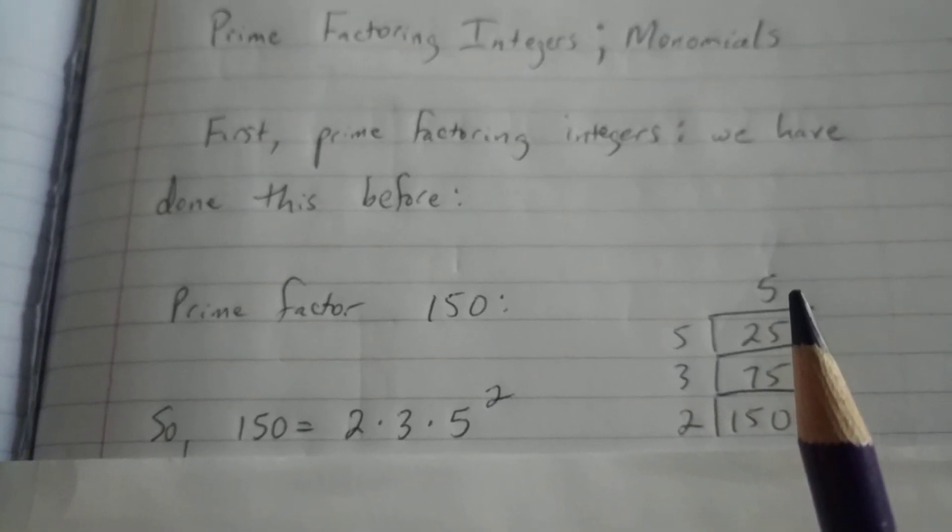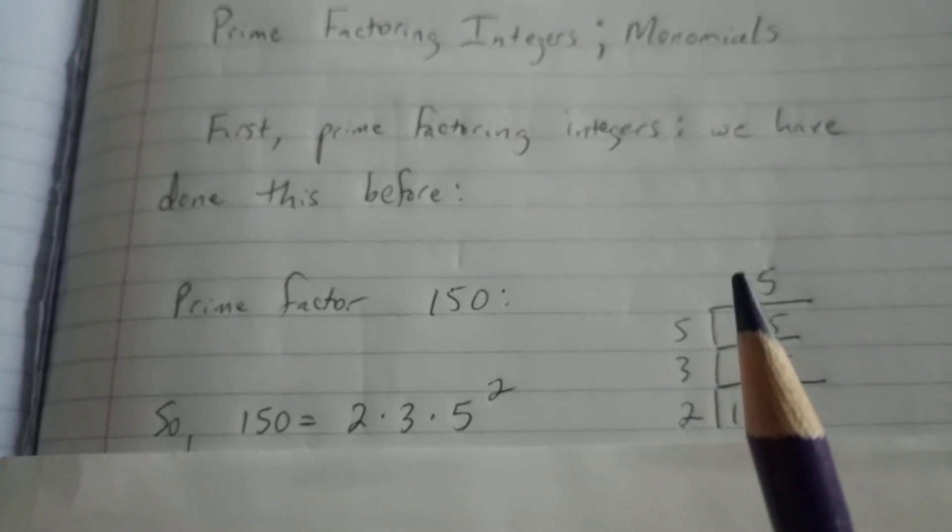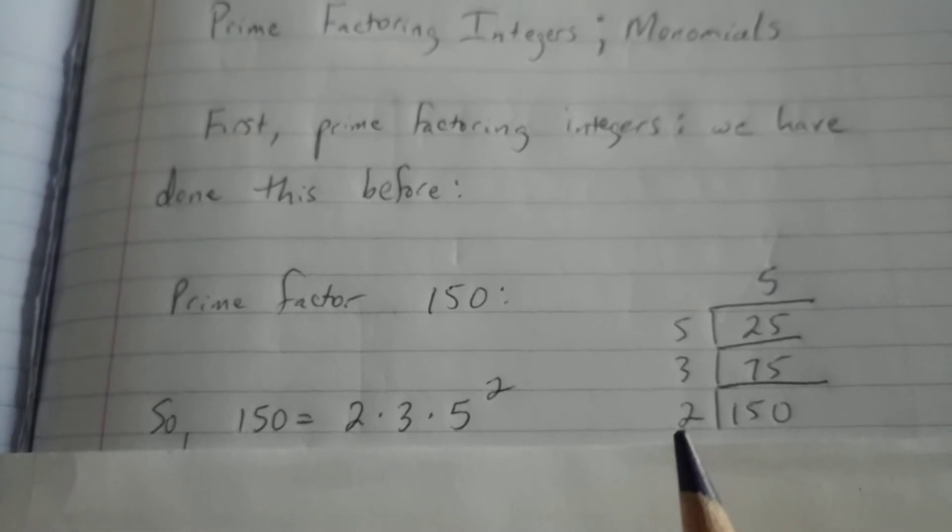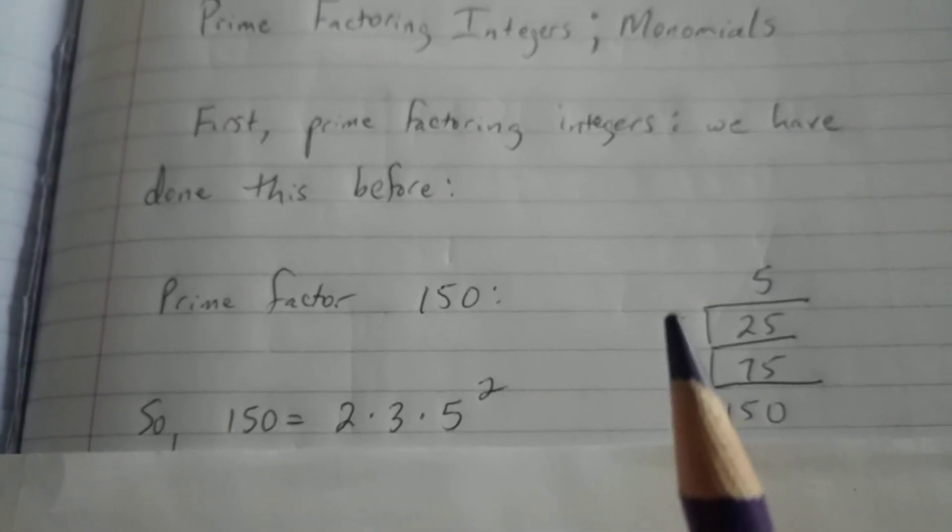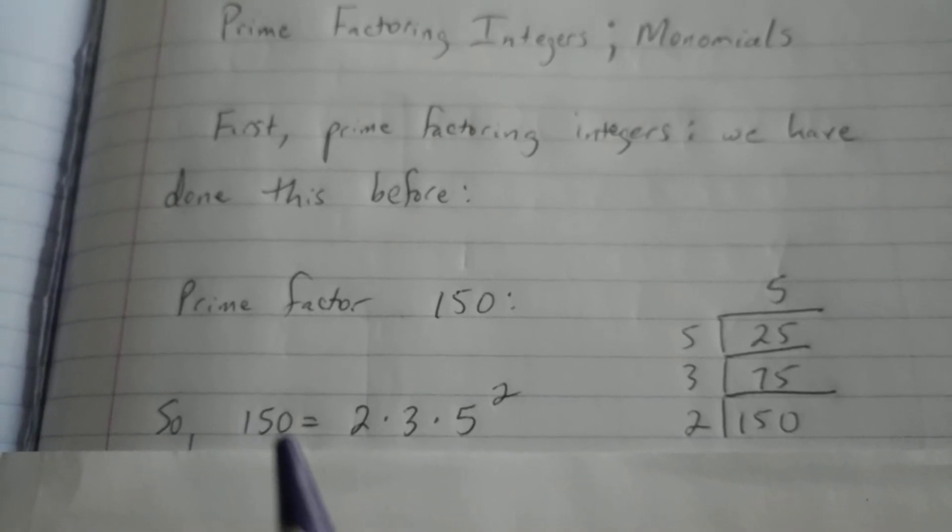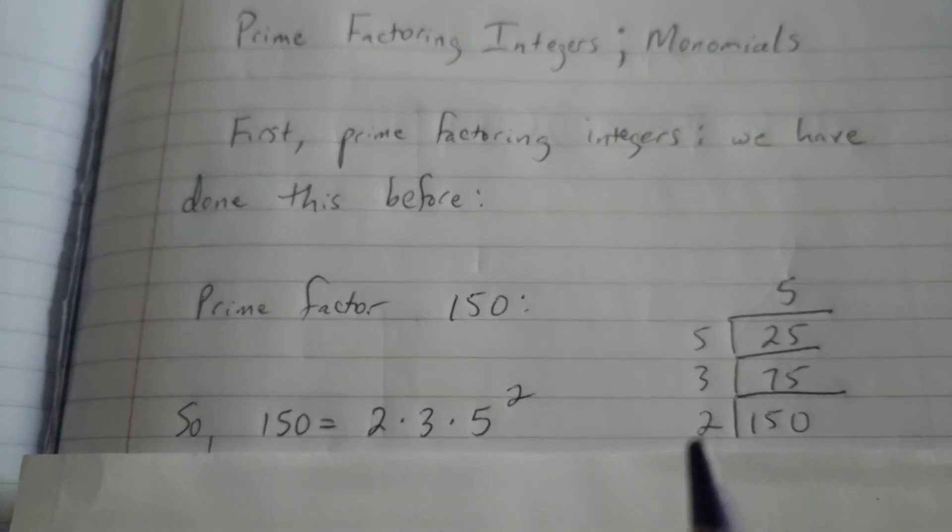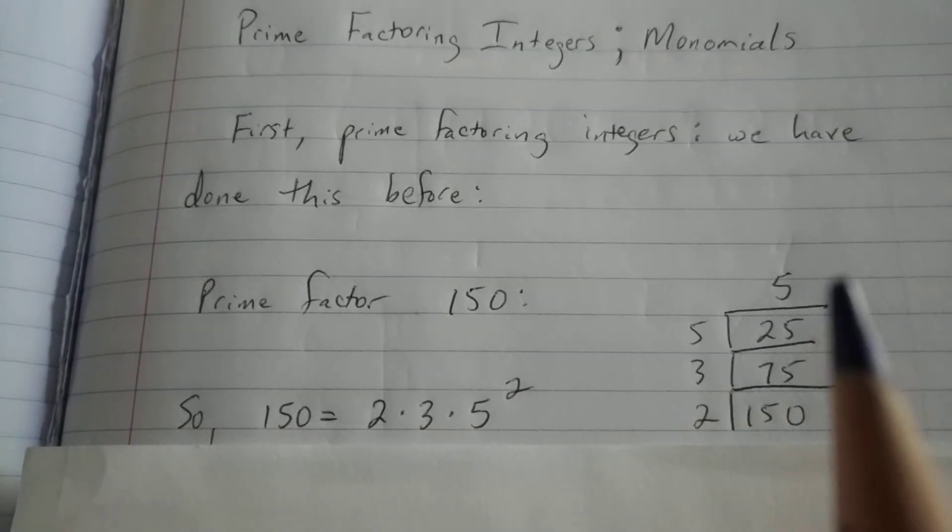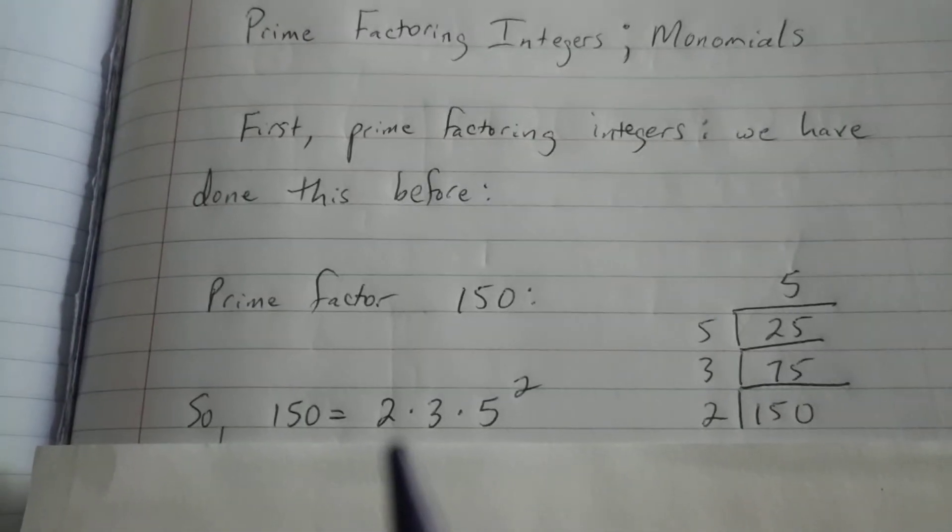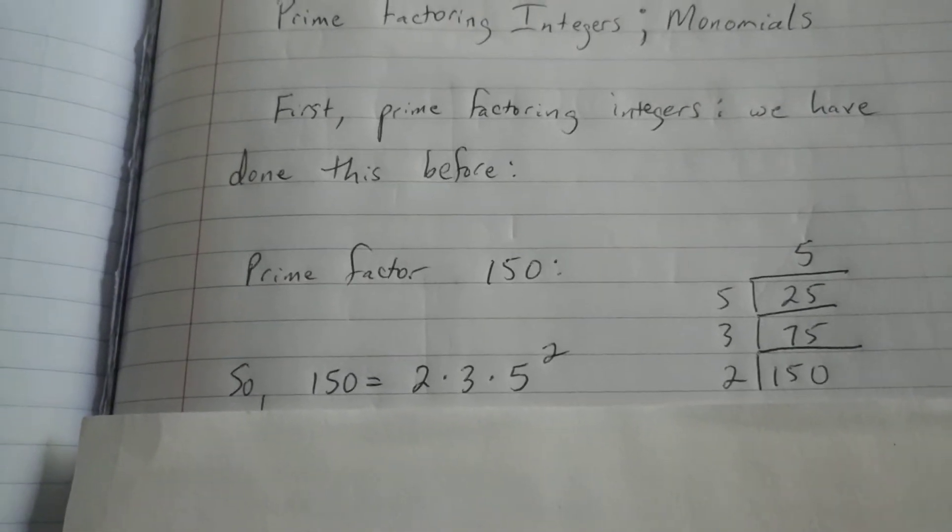When the top end number is prime itself, we have completed the prime factorization process. We take these numbers, 2, 3, 5, and 5, and we conclude that the prime factorization of 150 is equal to 2 times 3 times 5 squared. And that problem is complete.